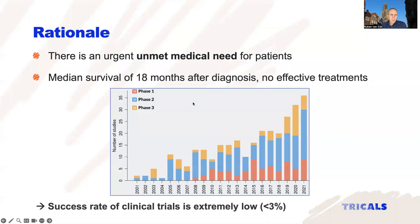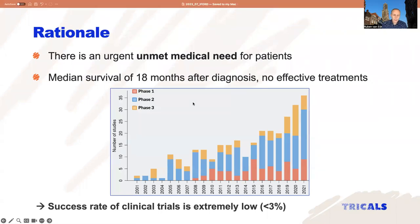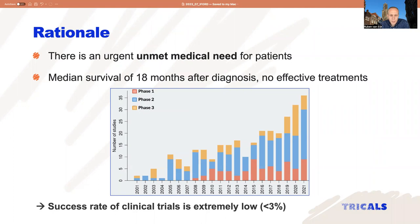The rationale for this work is mainly driven by the urgent medical need for patients living with ALS. These patients have a very poor prognosis with a median survival of only 18 months after diagnosis. Some patients have a much shorter survival than that, and some others have much longer. The key issue, at least for patients in Europe, is that there are no effective treatments available. The good news is that there are a lot of trials going on.